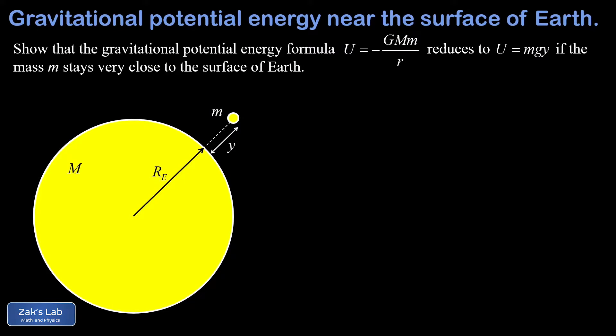In the previous video we derived a general formula for the gravitational potential energy between two point masses. We used the symbol capital U for the gravitational potential energy and it turned out to be negative GMm over r, where big G is the universal gravitational constant, the two point masses are big M and little m, and r is the center to center separation distance.